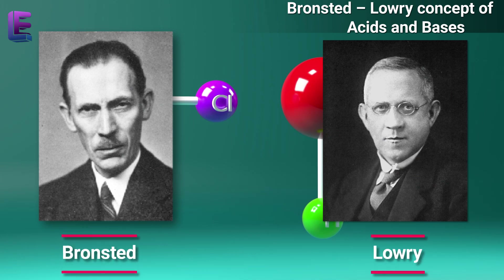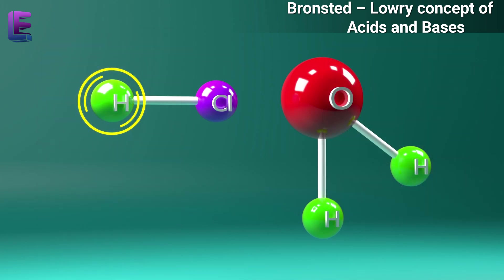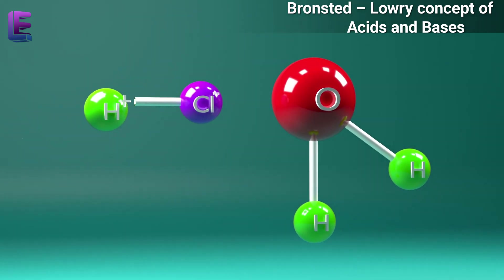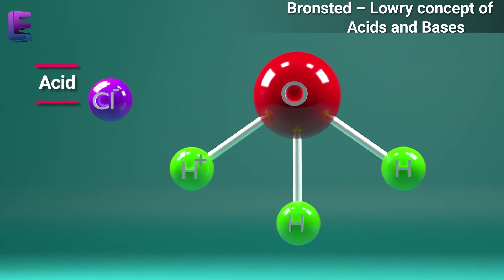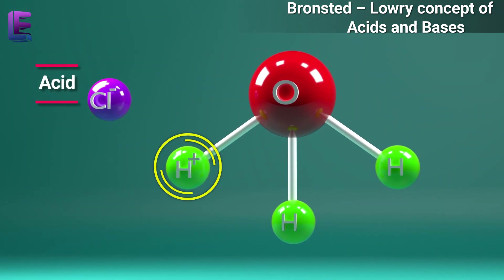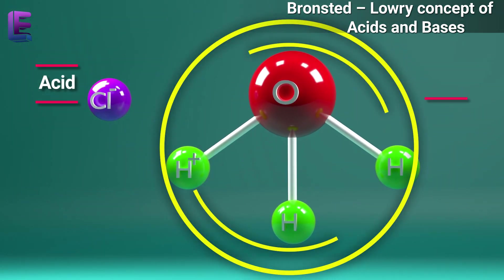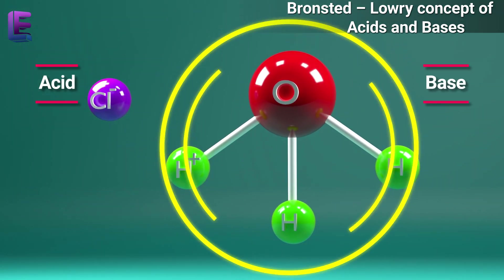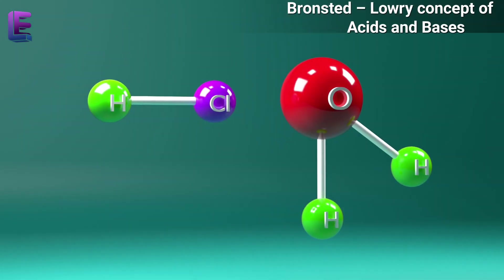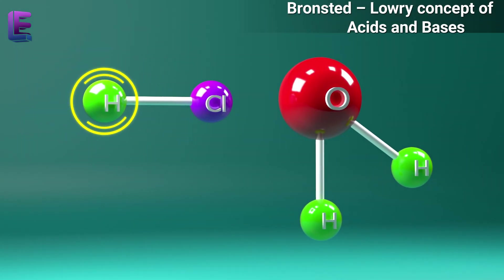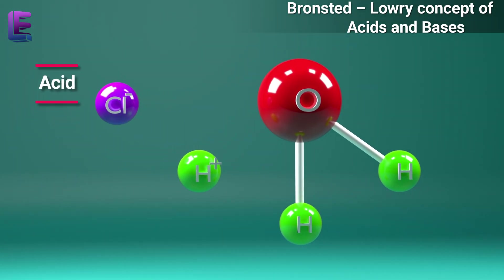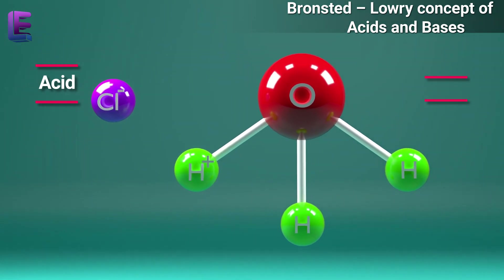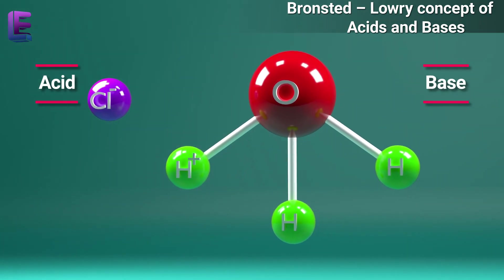According to the Bronsted-Lowry concept, acids are the substances capable of donating a hydrogen ion, while bases are the substances capable of accepting a hydrogen ion. In simpler words, proton donors are acids and proton recipients are bases.